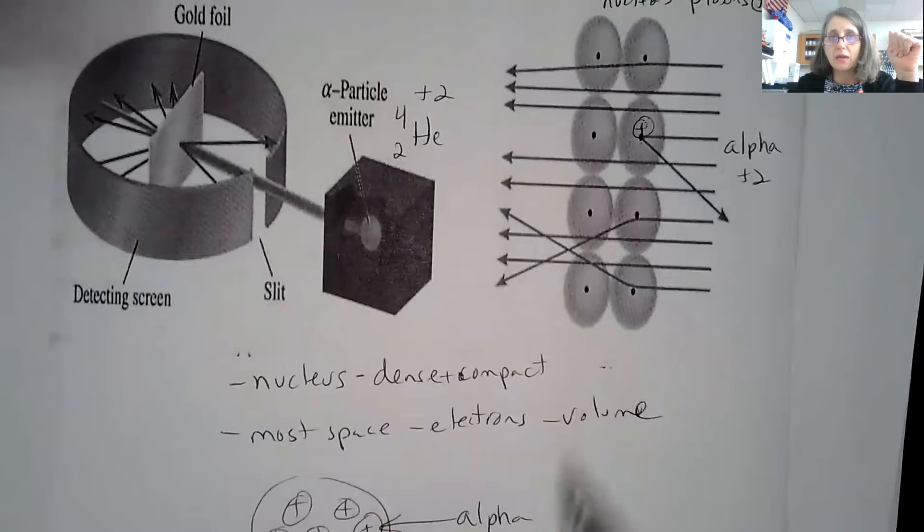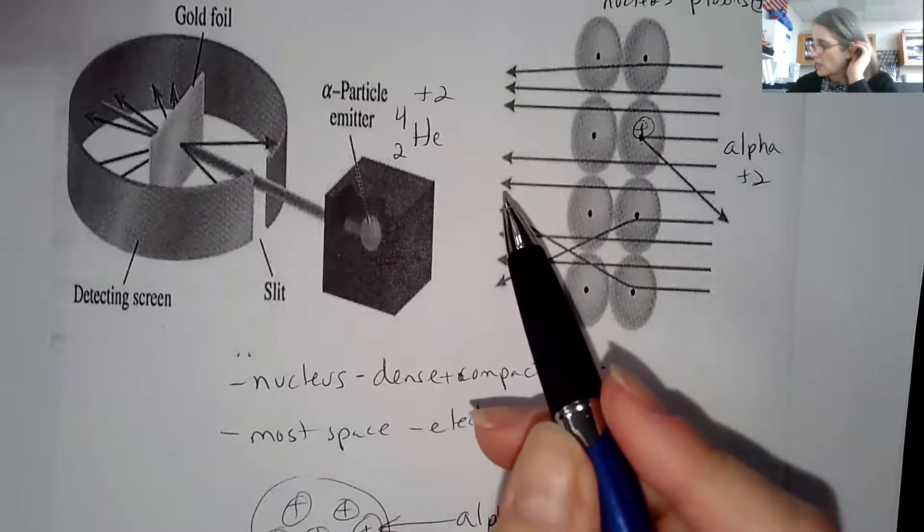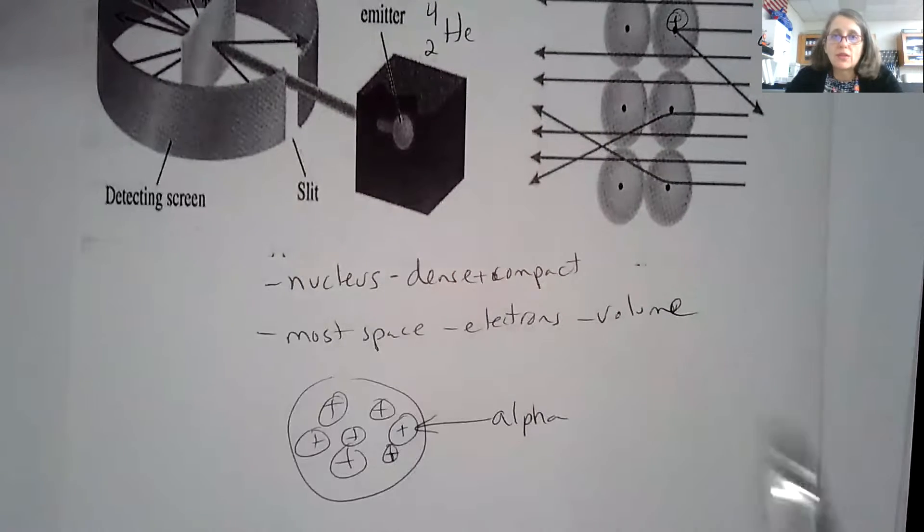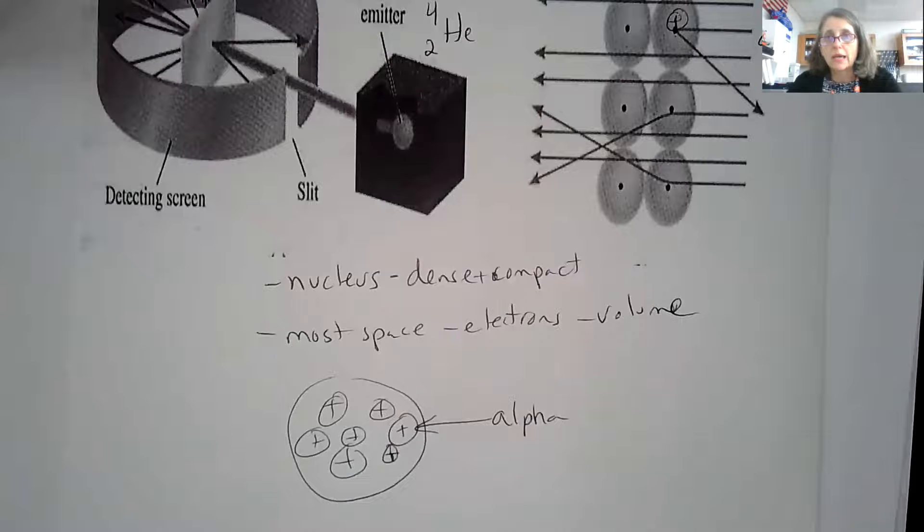Instead, he kept seeing that they went straight through. That obviously disproved what they thought the atom looked like. When the technology improves, when they get more information, they change the model.